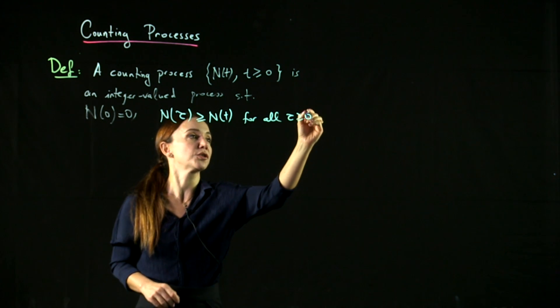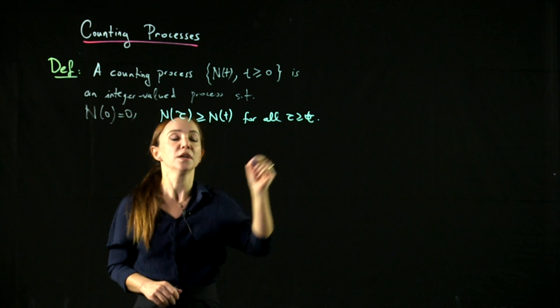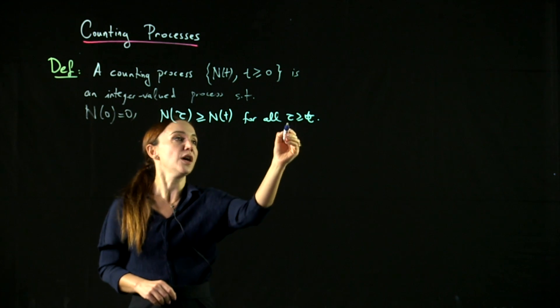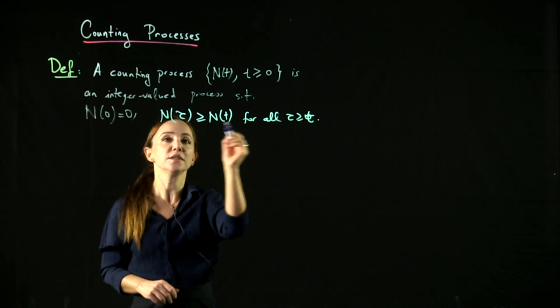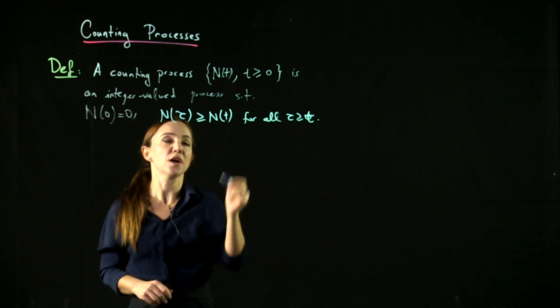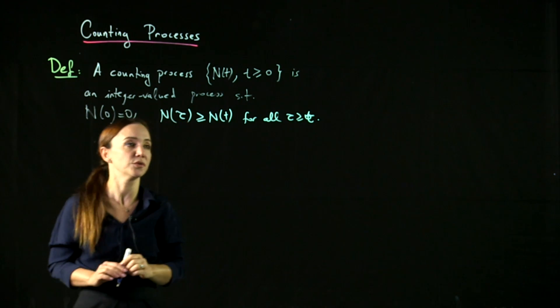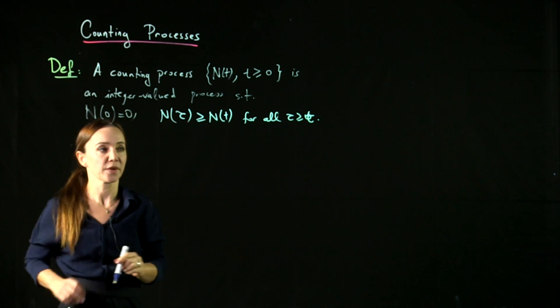For time tau greater than or equal to t, if tau is larger than t, then N(tau) is greater than or equal to N(t).